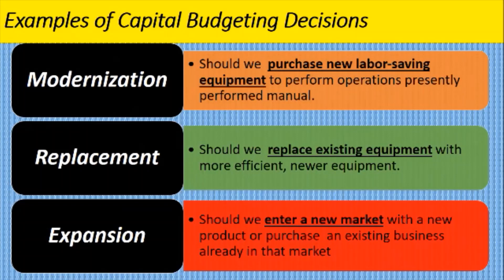These are three of the major ones you will come across very often. First, we have modernization — the decision being: should we purchase new labor-saving equipment to perform operations presently performed manually? Next, we have replacement decisions: should we replace existing equipment with more efficient, newer equipment? Then we have expansion decisions: should we enter a new market with a new product, or should we purchase an existing business already in that market?